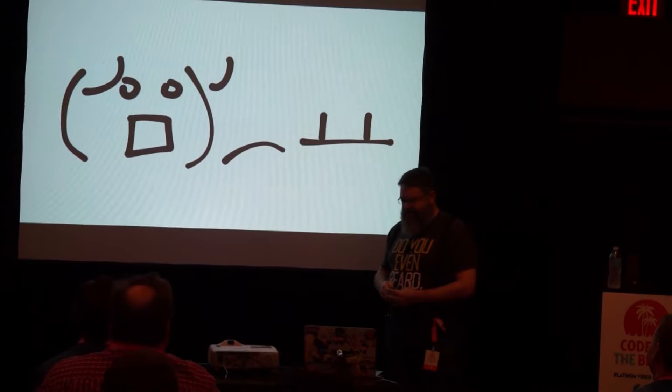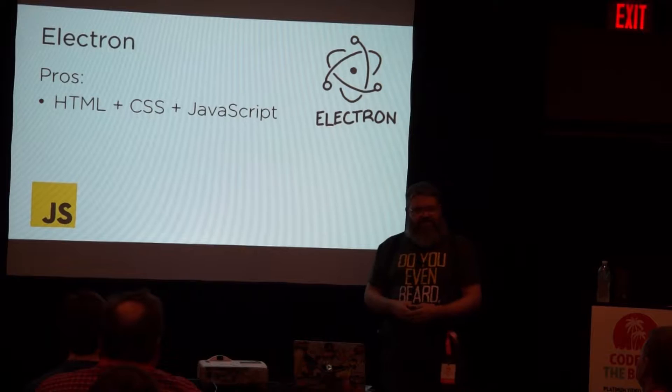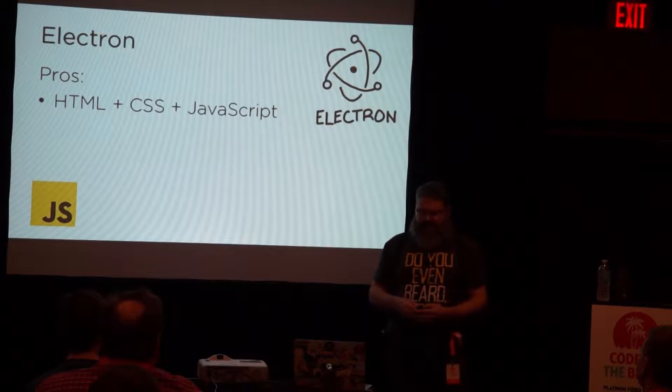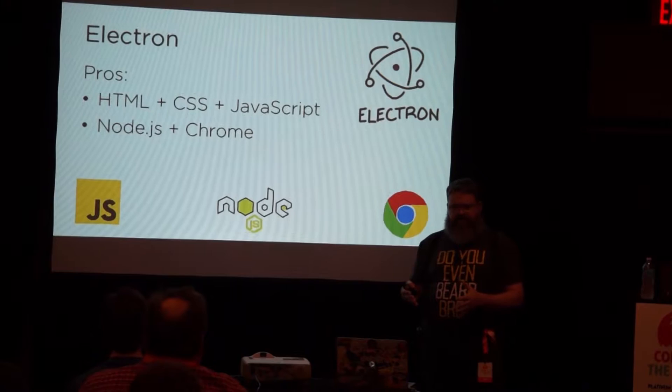I decided I'd heard about this thing called Electron and thought I'd give it a shot. The pros I found are that it is HTML, CSS, and JavaScript — technologies that I'm really comfortable with. And Electron is built on Node.js and Chrome. The cool thing is it's a specific version of Node.js and Chrome, so you're working with the latest version of Node and the latest version of Chrome when you're building your application.